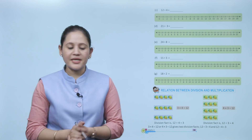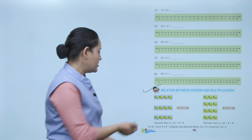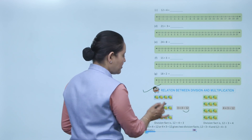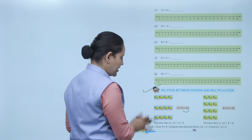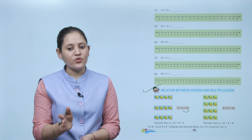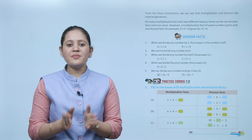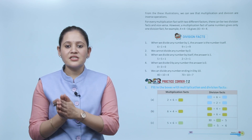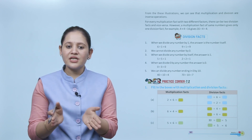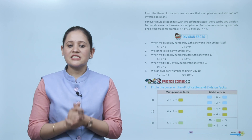Relation between division and multiplication: 3 into 4 is 12, giving division facts 12 ÷ 4 = 3 and 12 ÷ 3 = 4. For every multiplication fact with two different factors there are two division facts. However, a multiplication fact with the same number gives only one division fact — for example, 4 into 4 is 16, so only one fact: 16 ÷ 4 = 4.